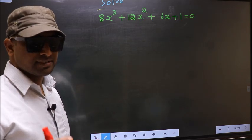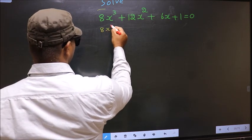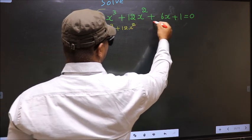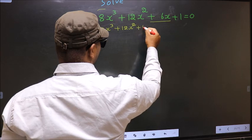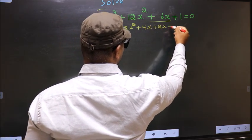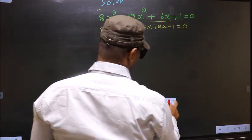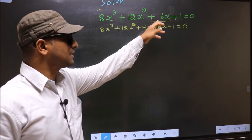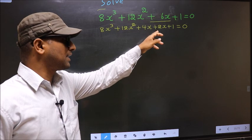In place of 6x, let's look at 8x³ + 12x² + 4x + 2x + 1 = 0. In place of plus 6x, I have written plus 4x plus 2x.